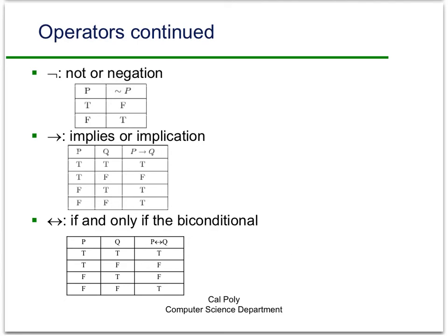The biconditional is basically the implication operator going both directions, so it basically says P if and only if Q. The way to think about that is P is true if and only if Q is true. This is the truth table for the biconditional operator. It's really pretty simple to understand: if both P and Q are true, then P if and only if Q is true. And if both P and Q are false, then P if and only if Q is true. Otherwise, it's false.